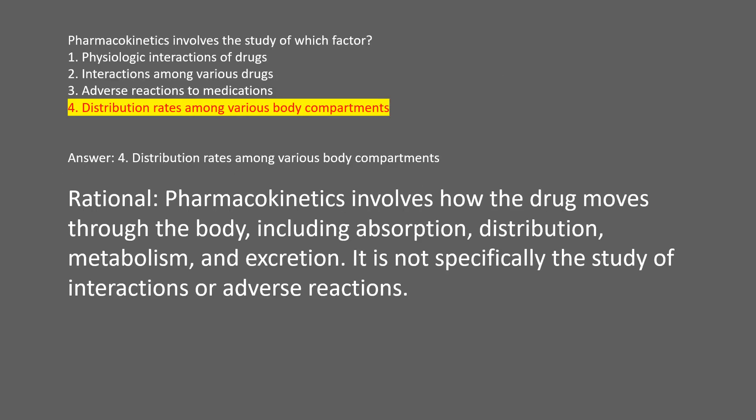Answer: 4. Distribution rates among various body compartments. Rational: pharmacokinetics involves how the drug moves through the body, including absorption, distribution, metabolism, and excretion. It is not specifically the study of interactions or adverse reactions.